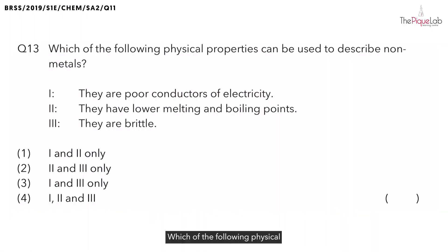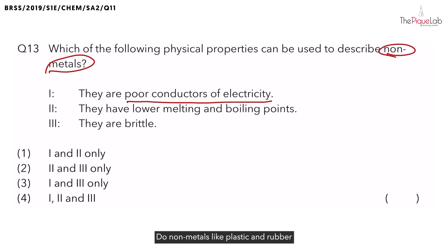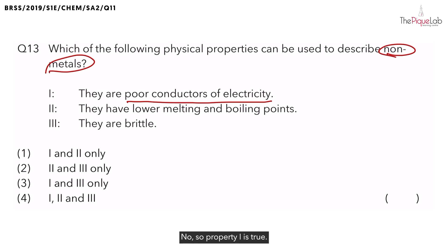Question 13: Which of the following physical properties can be used to describe non-metals? Property 1: They are poor conductors of electricity. Electrical conductivity of a material is a measure of how readily electrical current passes through it. Do non-metals like plastic and rubber allow electricity to pass through them easily? No. So property 1 is true.